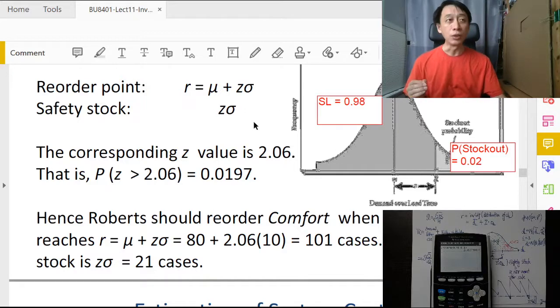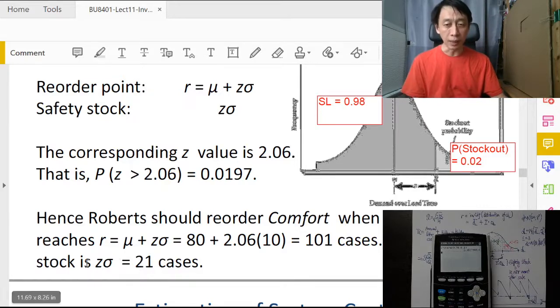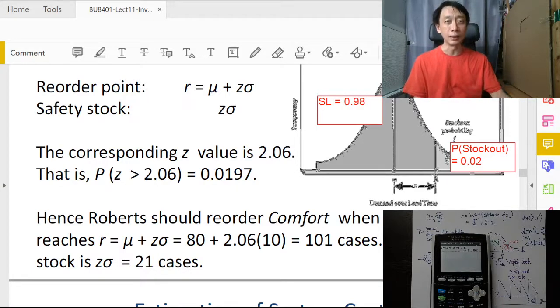How many is the safety stock? Well, that's going to be Z times sigma, so that is our multiplication here, 2.06 times 10, so that's 20.6, rounding to 21 cases.